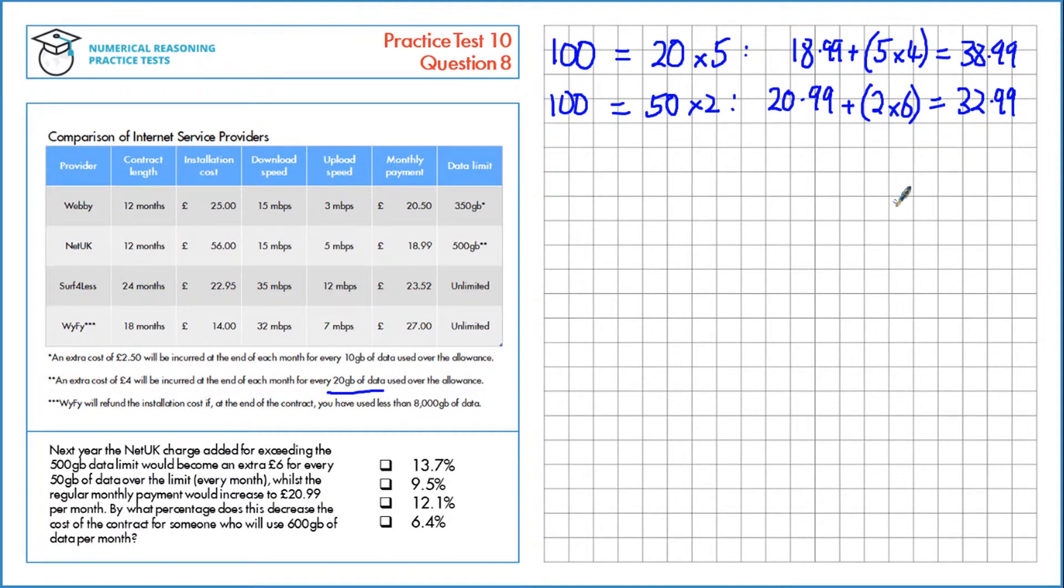So let's calculate the current cost of a contract and the new cost of a contract. It's a £56 installation cost regardless, and it's over 12 months. So the current cost is £523.88. The new cost will be £32.99 per month, which is £451.88.